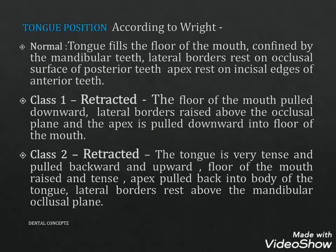Tongue position according to Wright: In the normal position, the tongue fills the floor of the mouth confined by the mandibular teeth; lateral borders rest on the occlusal surface of posterior teeth and the apex rests on the incisal edges of the anterior teeth. In Class 2, the tongue is retracted, the floor of the mouth is pulled downward, lateral borders are raised above the occlusal plane, and the apex is pulled downward into the floor of the mouth. In Class 3, the tongue is very tense and pulled backward and upward, the floor of the mouth is raised and tense, the apex is pulled back into the body of the tongue, and lateral borders rest above the mandibular occlusal plane.